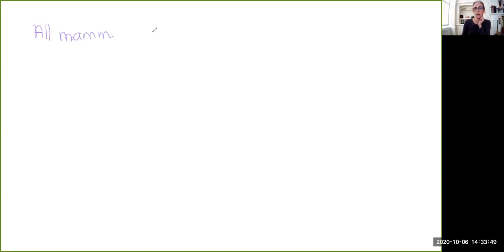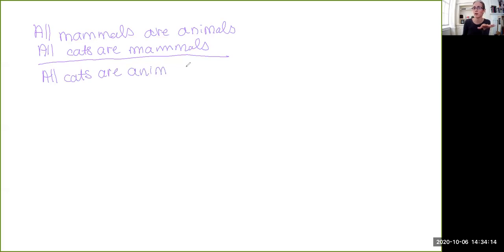So consider the argument that all mammals are animals. All cats are mammals. Therefore, here I'm just going to draw a line that's got the premises on the top, the conclusion on the bottom. From here we will conclude that all cats are animals. So this is a good argument. And I will make this explicit once we actually discuss how to formally define the notion of goodness of a syllogism. But just so that you're not confused, this is a good argument.